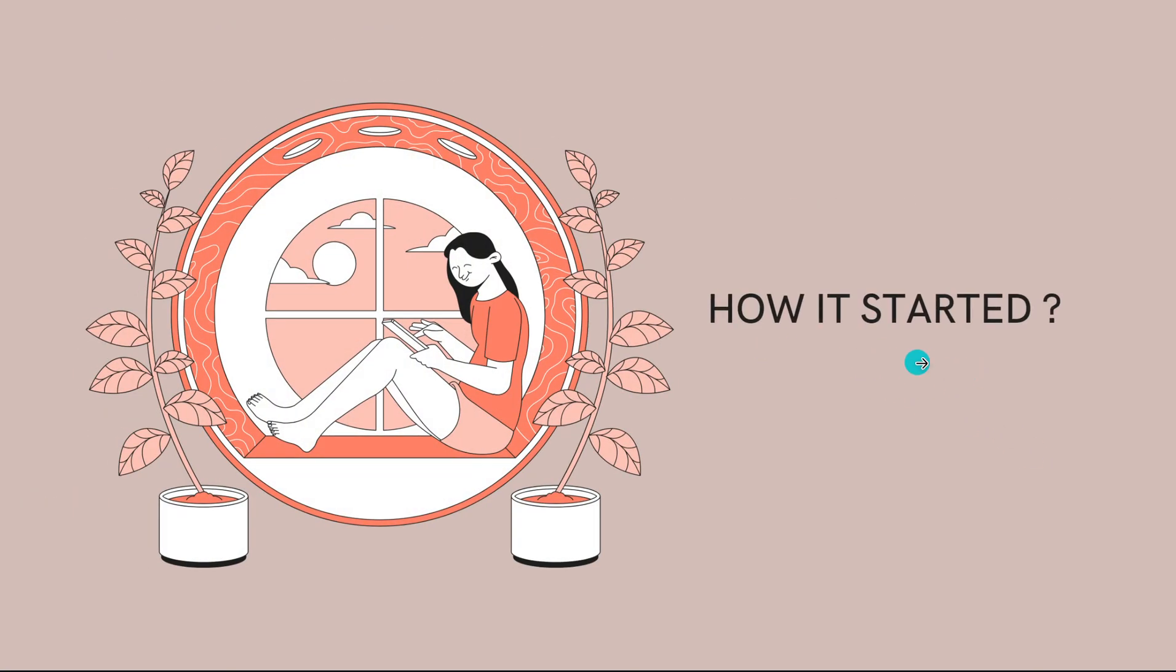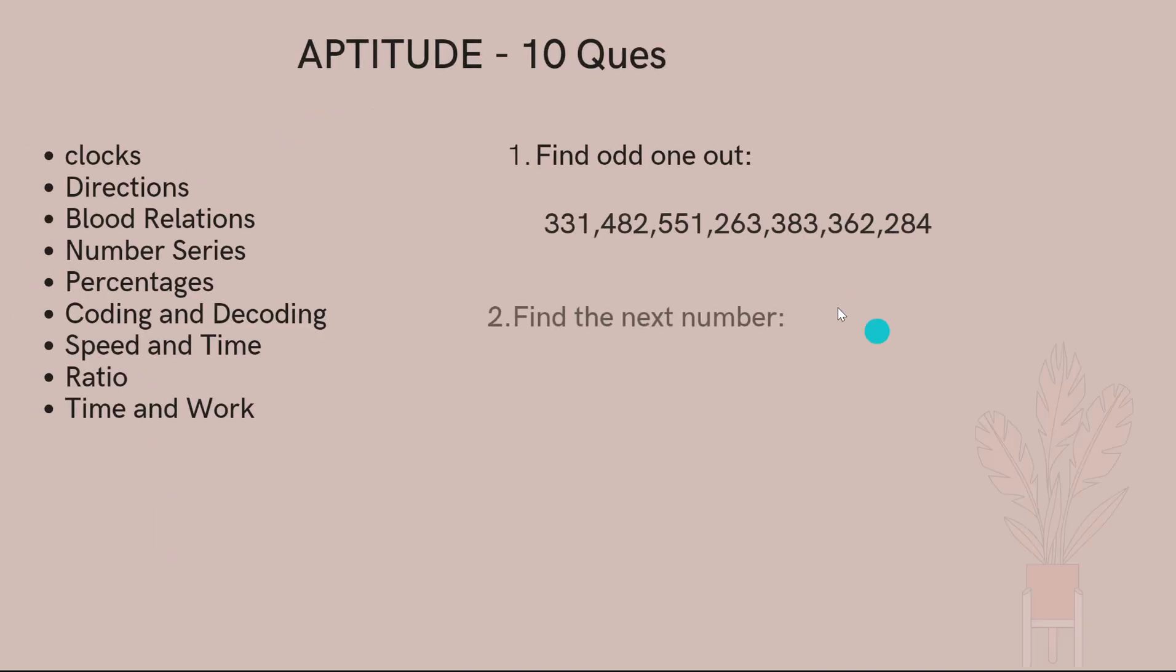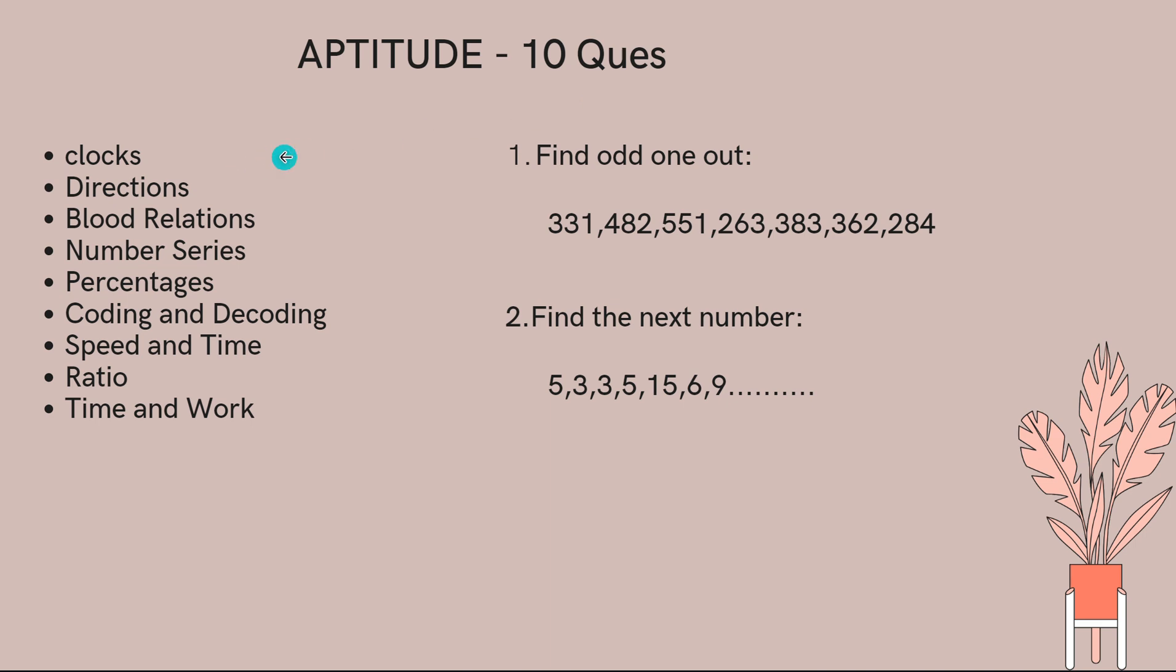Let's see aptitude - it's 10 questions covering topics like clocks, directions, blood relations, number series, percentages, coding and decoding, speed and time, ratio, and time and work. As per me, I got questions from blood relations, number series, coding and decoding, ratio, and time and work. I did not get any questions from clocks and directions, but few of my friends faced questions from these topics.